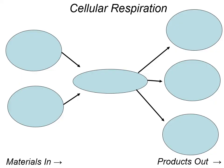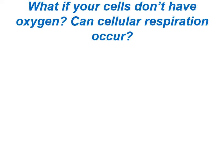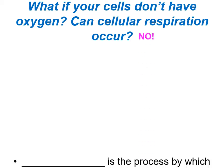Here's a simple graphic for cellular respiration, which occurs in the mitochondria. Materials going in: glucose and oxygen. Products coming out: water, carbon dioxide, and energy. If you compare this graphic to the photosynthesis graphic, you'll see they are exactly opposite — exactly flipped from each other. Since oxygen is a required starting material for cellular respiration, if your cells don't have oxygen, cellular respiration cannot occur.